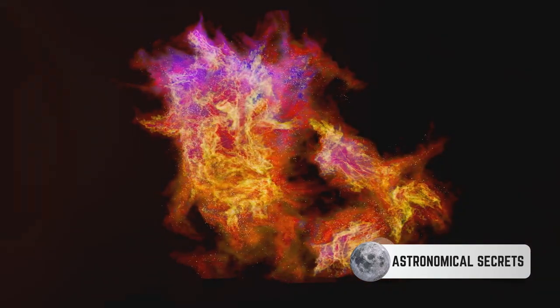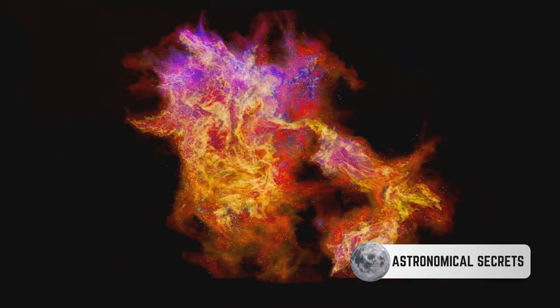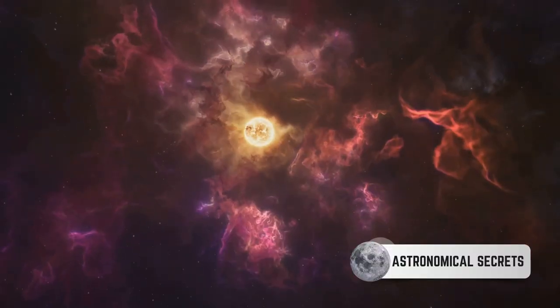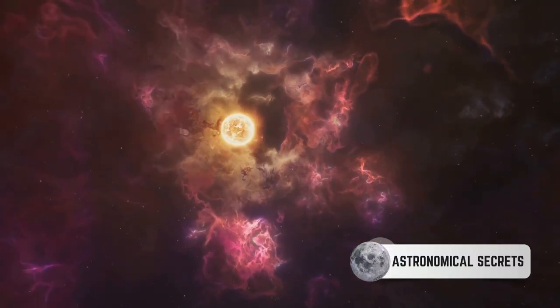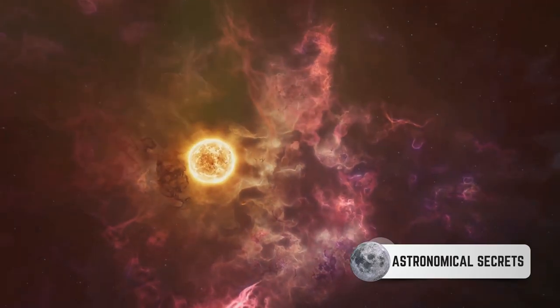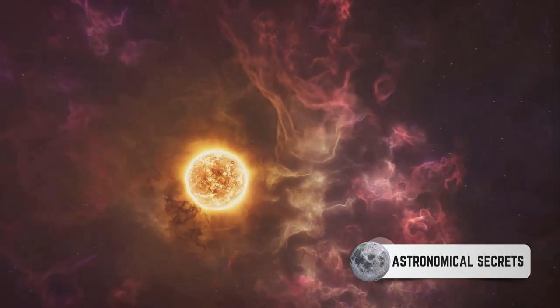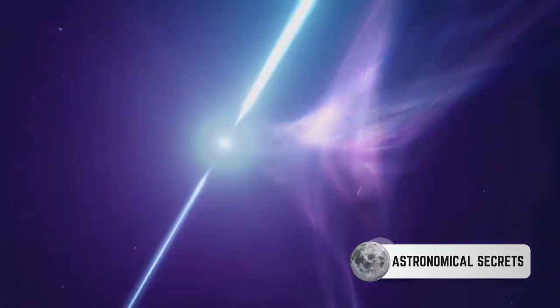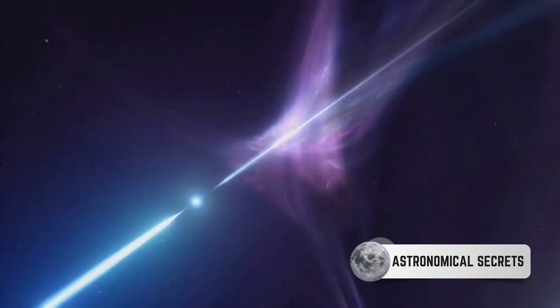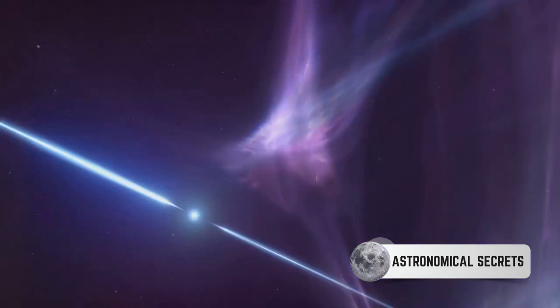This collapse creates a hot, dense region at the center of each fragment, marking the birthplace of a protostar. Gravity, the cosmic puppet master, relentlessly pulls in the surrounding gas and dust. These materials, drawn into the gravitational well of the protostar, contribute to its growth. Over time, the protostar grows in both mass and size, feeding off the abundant material within its parent cloud.